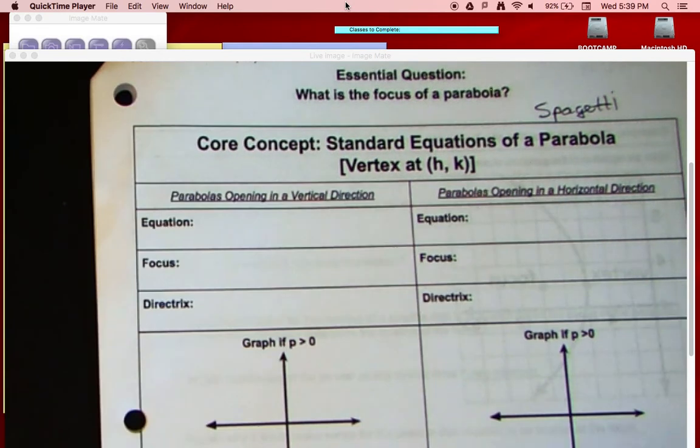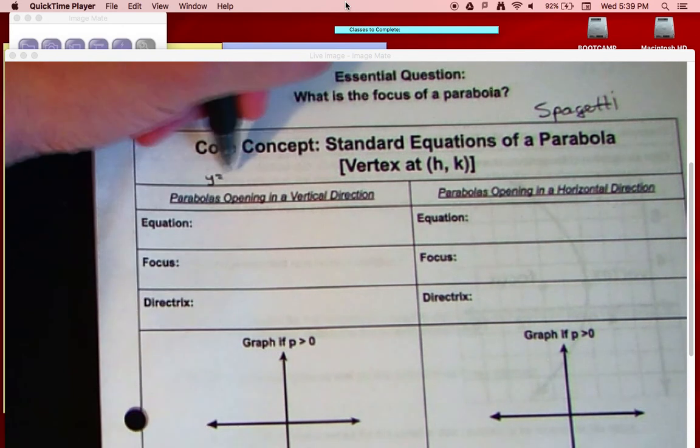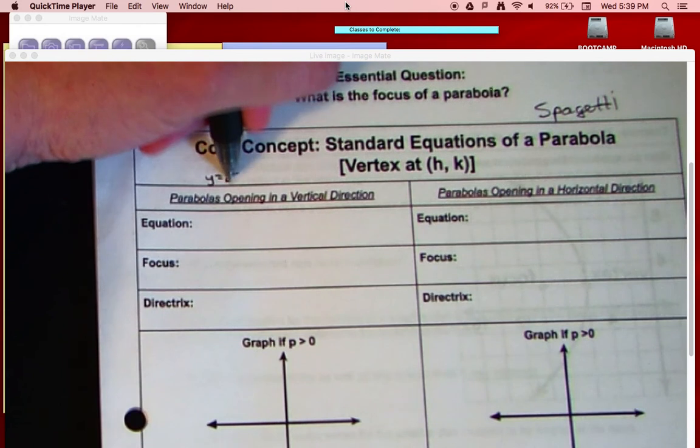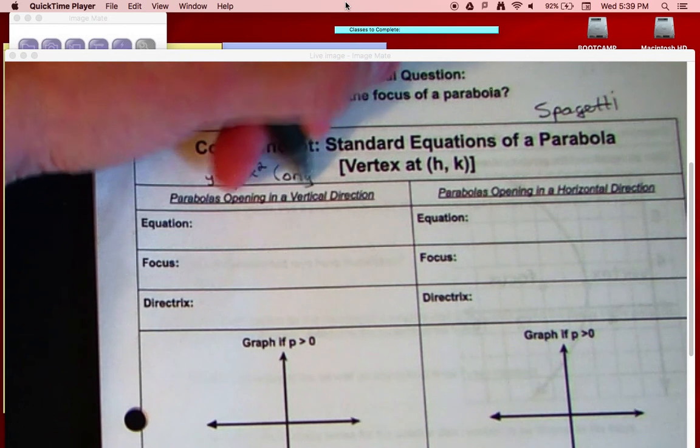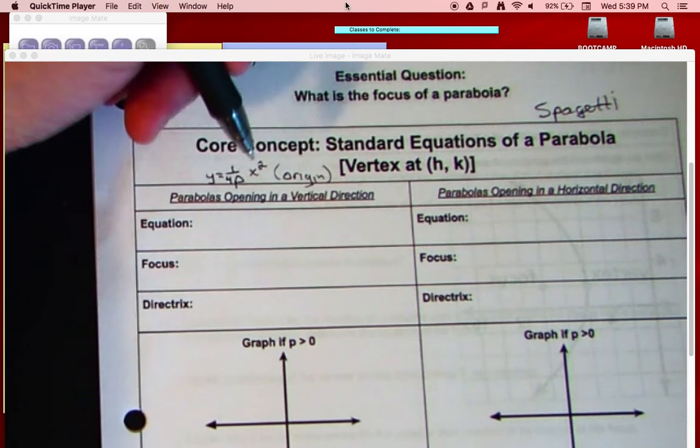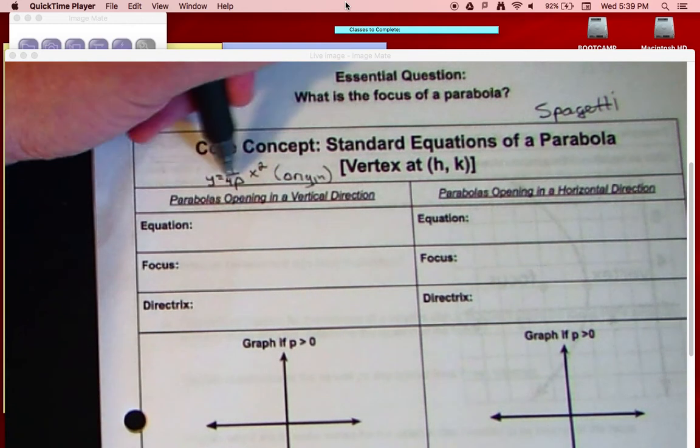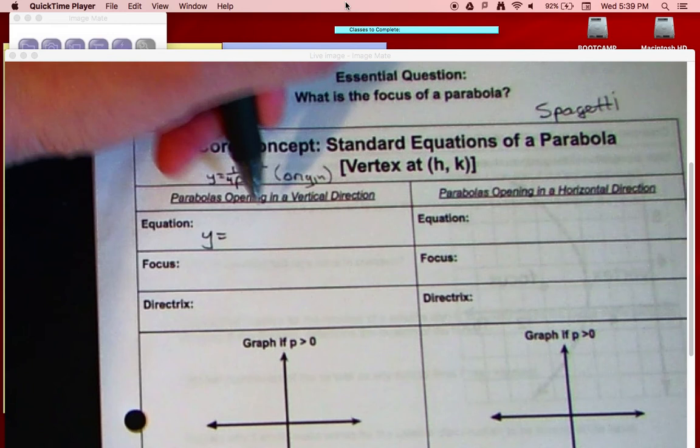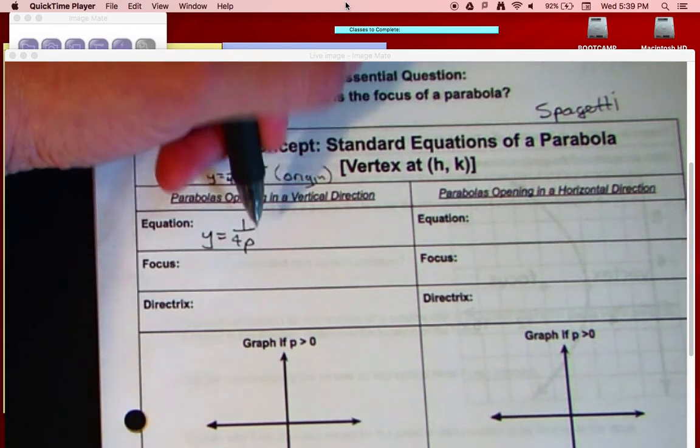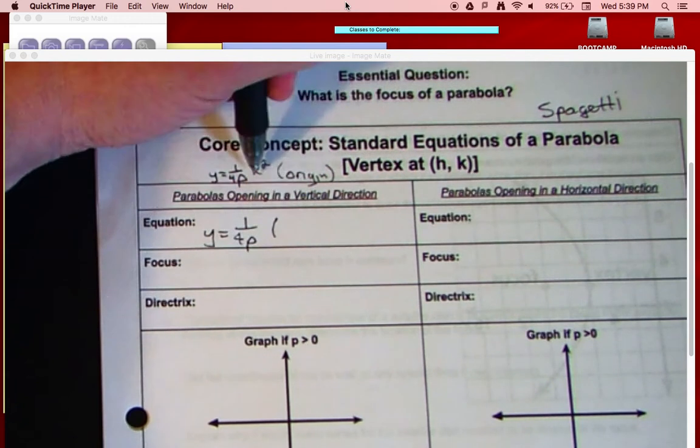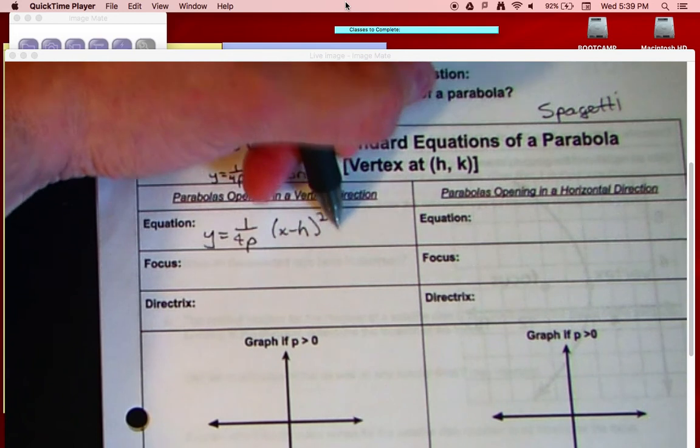The equations are going to look very similar. If you remember the previous equation was y equals 1 over 4p x squared, this was if it was on the origin. So h is 0 and k is 0, very similar though. If we move this thing off the origin, our equation changes just a little bit. It's going to be y equals 1 over 4p, and then instead of x squared, we're going to have x minus h squared, and then plus k.